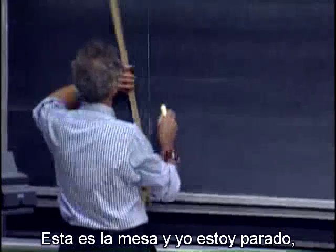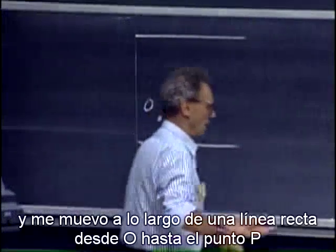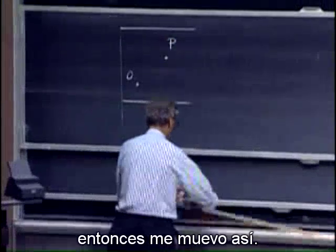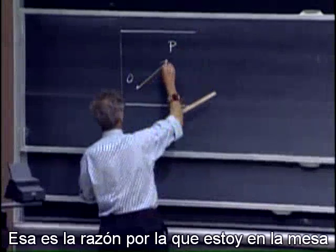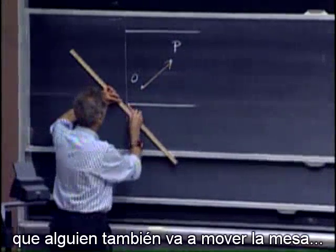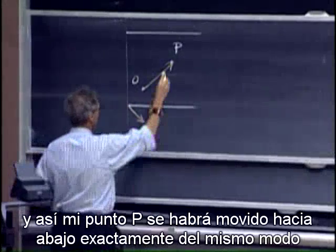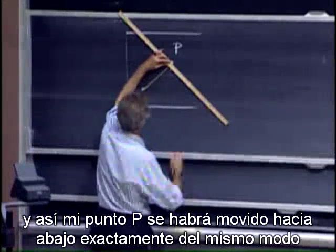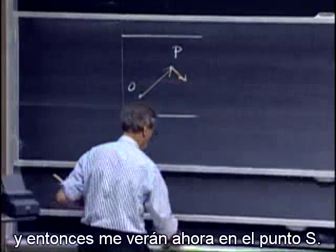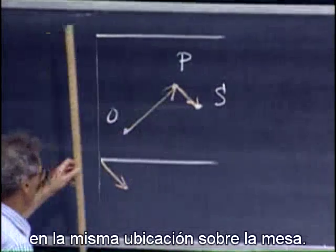Imagine that I'm standing on the table in 26100. This is the table, and I am standing at point O, and I move along a straight line from O to point P. It just so happens that someone is also going to move the table in that same amount of time from here to there. So the table will have moved down, and my point P will have moved down exactly the same way, and you will see me now at point S, although I'm still standing at the same location on the table. The table has moved.